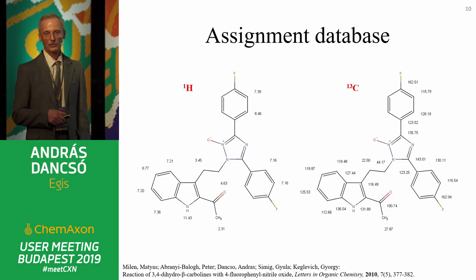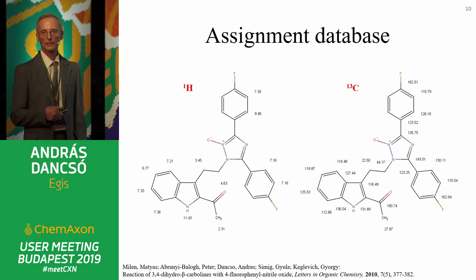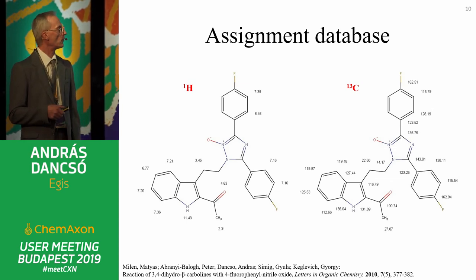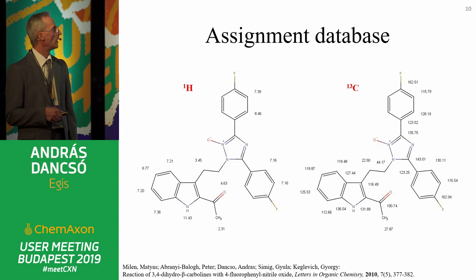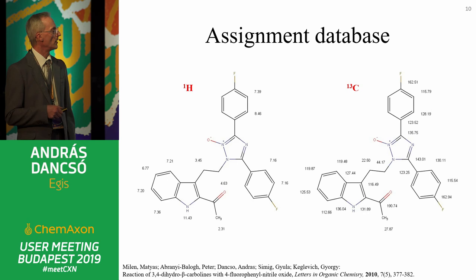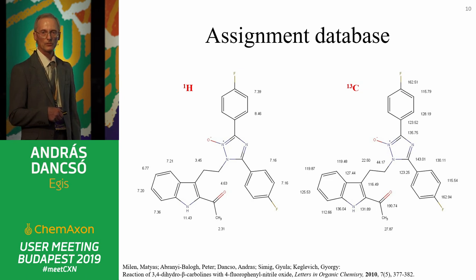Another feature is the assignment database. Marvin has a nice feature where you can attach data to atoms and even to bonds. In our case, we attach NMR chemical shifts to atoms, and these can be stored in our database. These are chemically intelligent structures, so they can be searched by substructure search or other search methods.